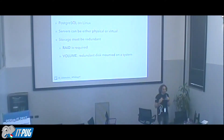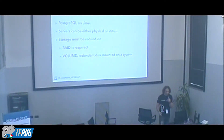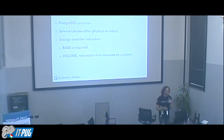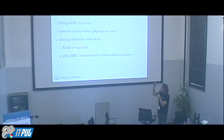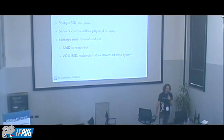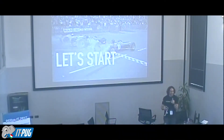All of this enforces us to think about practicing and testing — become familiar with procedures. A few notes on scope: I could talk about this topic for four days, so we'll simplify. We're talking about Postgres on Linux servers — physical or virtual, it doesn't matter — but storage must be redundant. At least RAID is required, and we talk about volumes as redundant disks mounted on a system.